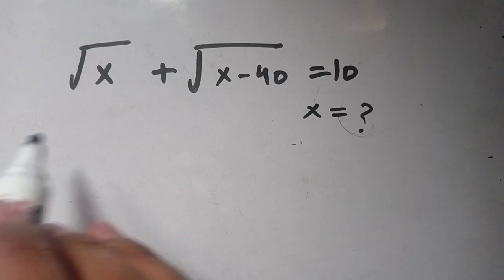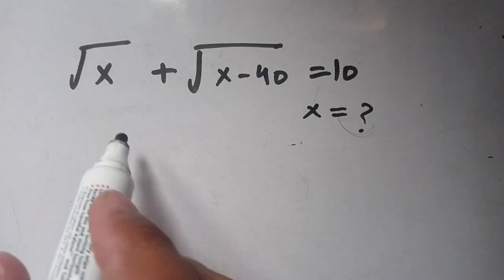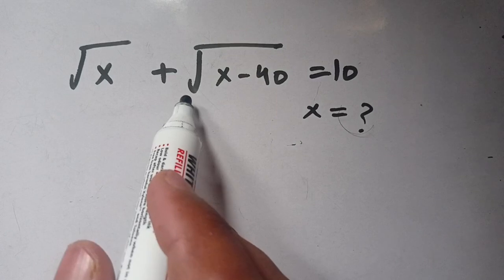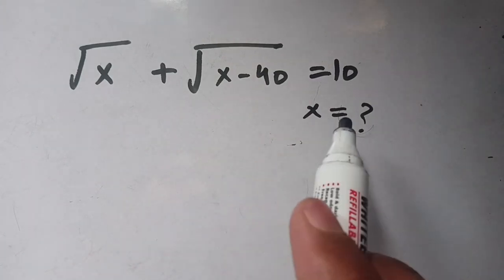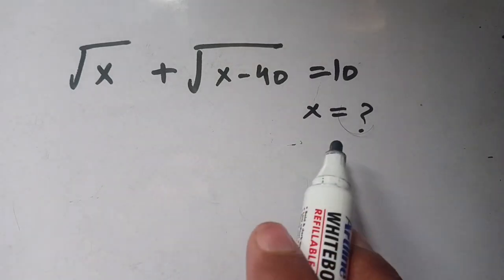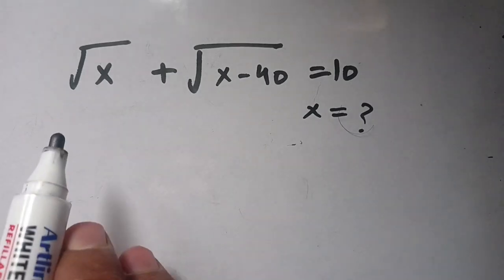Everyone, in today's video we are going to solve this algebra problem: square root of x plus square root of x minus 40, it is equal to 10, and we have to find the value of x which satisfies this equation.